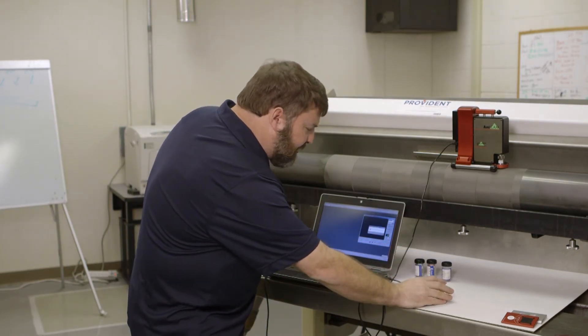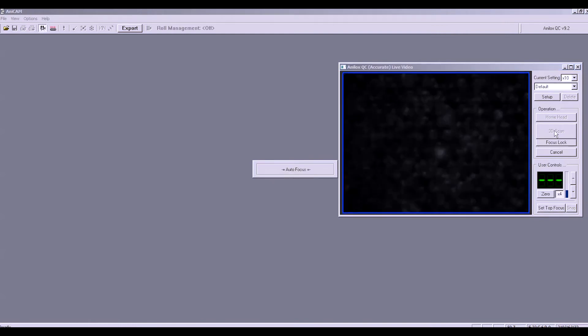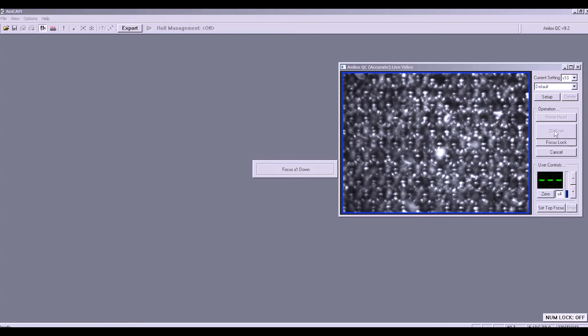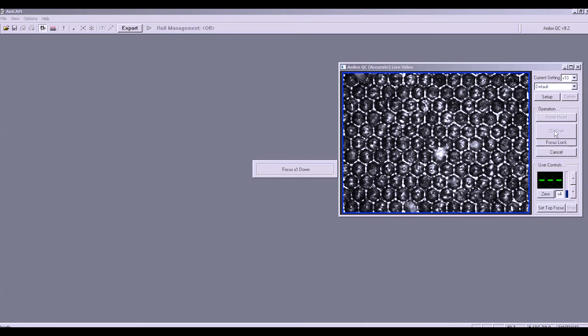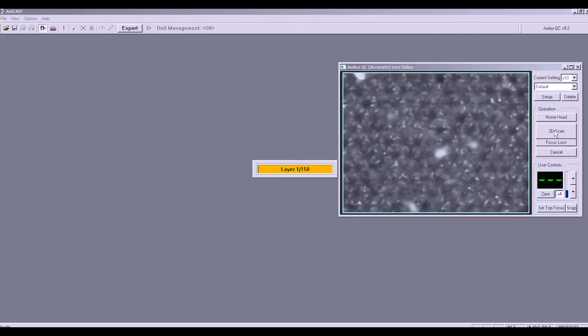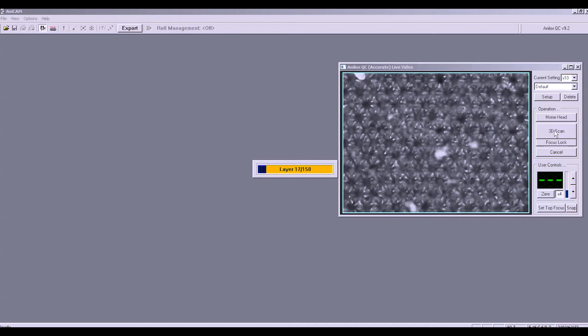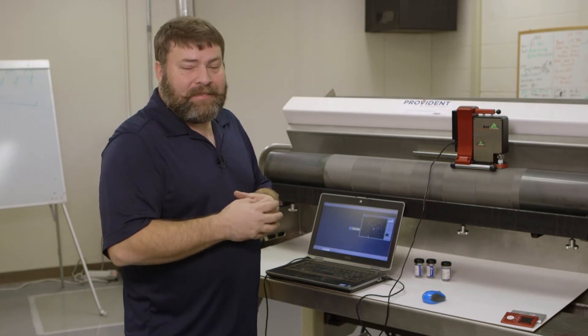Once that's done, I just press 3D scan. What the unit is doing at this point is it's actually going to find its focus based off of what you told it. It's going to adjust the lighting. And once it starts, it's going to take a picture and then move down one micron and take another picture. And it's going to do that for 150 times. So it captures a picture every micron from the top of the cell to the bottom of the cell. This whole process takes about 60 seconds.